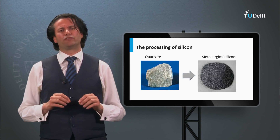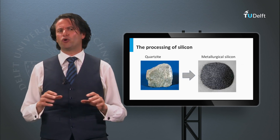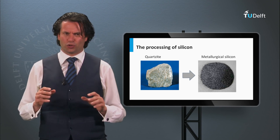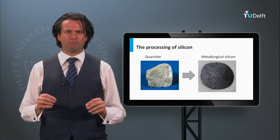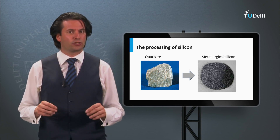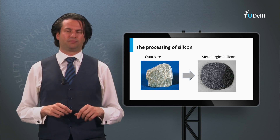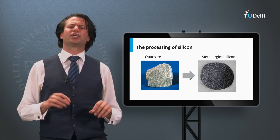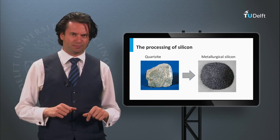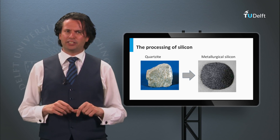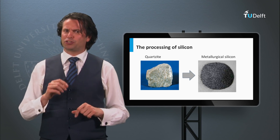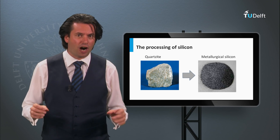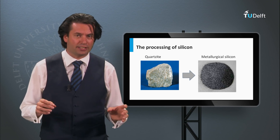The lowest quality of silicon is the so-called metallurgical silicon. The source material for making metallurgical silicon is quartzite, which is a rock of pure silicon oxide.